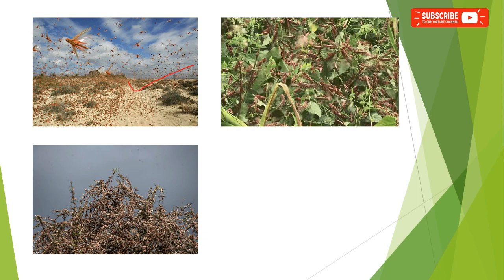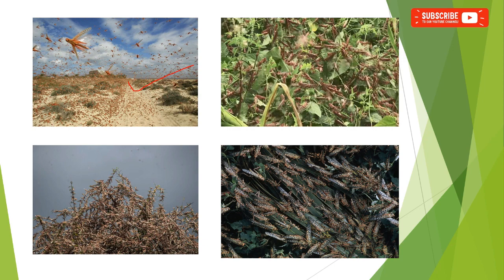The adult stage is mainly involved in swarming. Here you can see the locust swarming and also the locust attacking pulse crops and other crops as well as tree species, feeding voraciously.